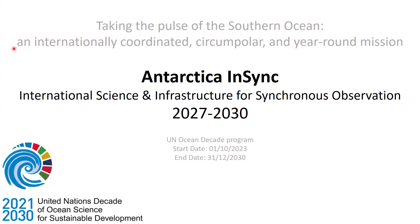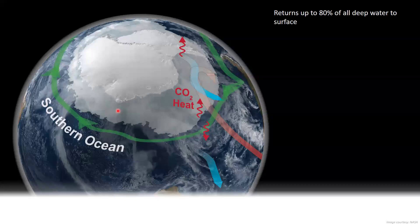The idea is to really internationally coordinate and do circumpolar and year-round observations to understand and take a snapshot of the system — to have a baseline and observe how it's changing. Before I go into the details, I want to take a step back to understand the very important role that the Southern Ocean and Antarctica plays in the climate system and how it connects to the global climate system.